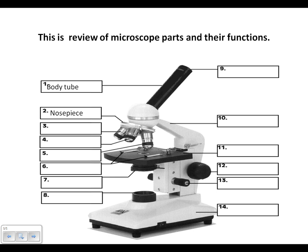Part number two is the nose piece. The nose piece holds all of the objectives. Part number three is the low power objective. The low power objective magnifies ten times.